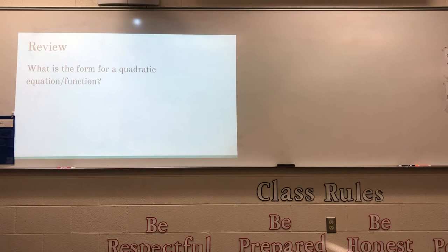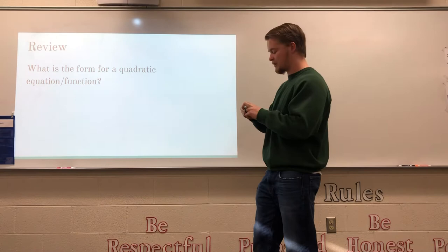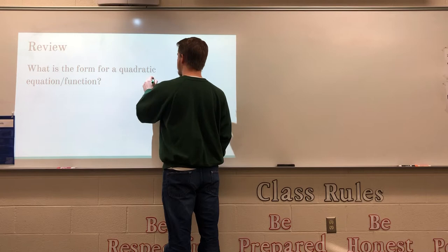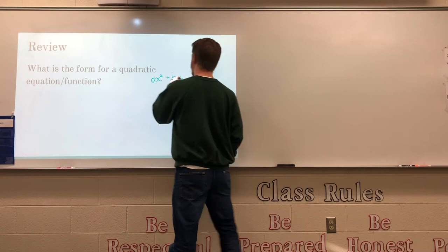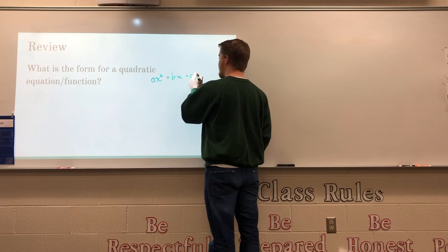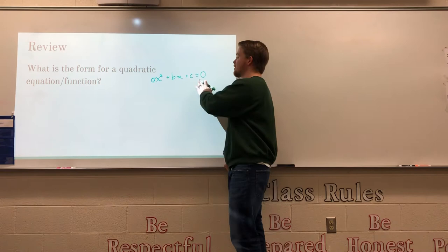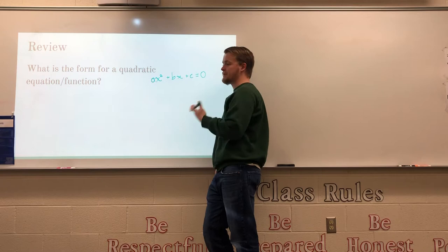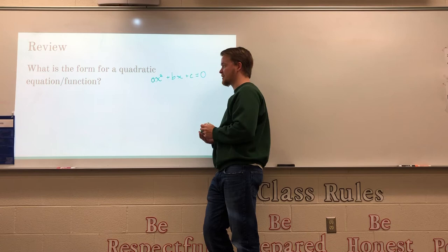To review, the form for a quadratic equation is ax squared plus bx plus c. When we set it equal to zero — ax squared plus bx plus c equals zero — that's when we're finding the zeros, meaning where it crosses the x-axis, as well as its minimum or maximum.